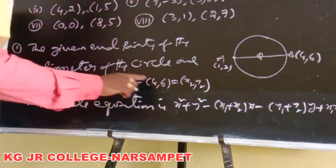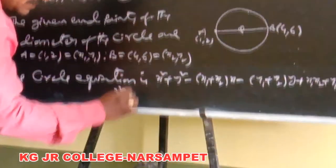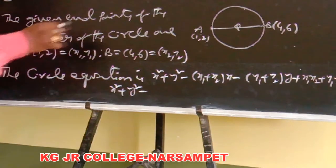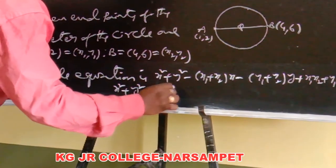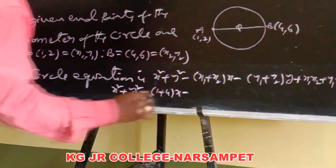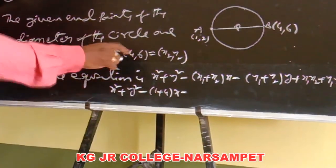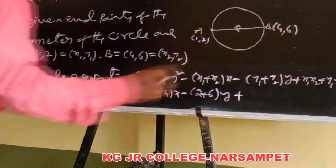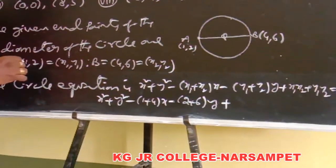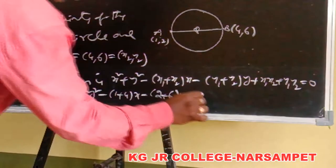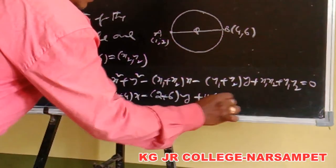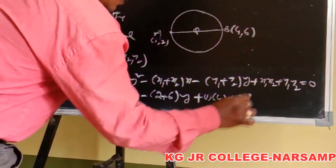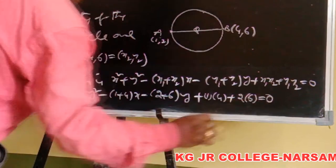Substituting these points into the circle equation: x² + y² − (x1 + x2)x − (y1 + y2)y + x1·x2 + y1·y2 = 0. So x1 + x2 = 1 + 4 = 5, giving −5x; y1 + y2 = 2 + 6 = 8, giving −8y; product of x-coordinates: 1 × 4 = 4; product of y-coordinates: 2 × 6 = 12, equals 0.